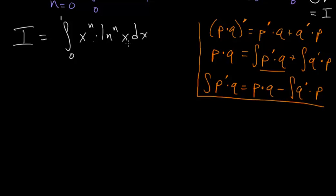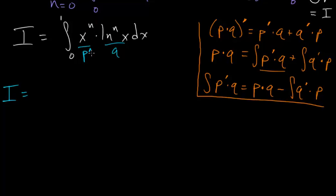In our case we want to get rid of this natural log of x to the nth power, so we want to take its derivative eventually n times, one step at a time. We want this to be our q, since we can take q's derivative in this integral. So ln^n(x) will be our q and x^n will be our p-prime. So I equals the antiderivative of p-prime, which is x^(n+1)/(n+1), times q, which is ln^n(x).